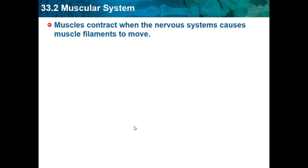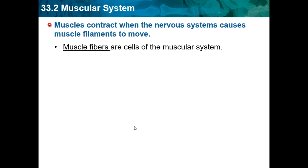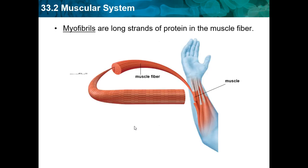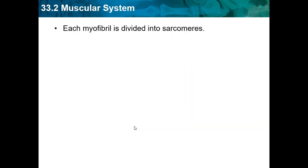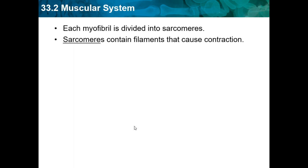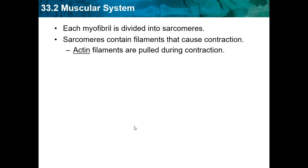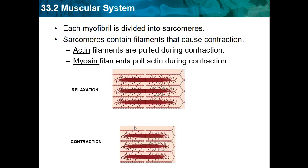Muscles contract when the nervous system causes muscle filaments to move. Muscle fibers are the cells of the muscular system. Myofibrils are long strands of protein in the muscle fiber. Each myofibril is divided into sarcomeres, which contain filaments that cause contraction. Actin filaments are pulled during contraction, and myosin filaments pull actin during contraction.